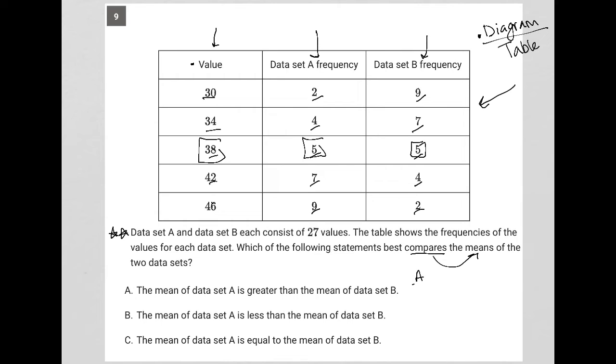For instance, for data set A, I can calculate the mean by multiplying each of the values by their frequency. So there's 2×30 plus 4×34 plus 5×38 plus 7×42 plus 46×9. I divide all that by 27. I go to my calculator, I type it in basically just as I just did, and what I am finding for the answer here is that the mean is equal to 40.52.